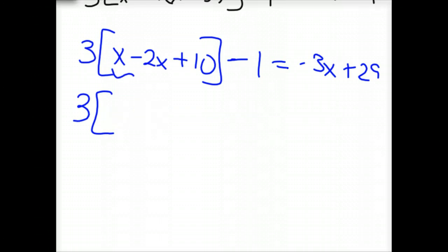So the 3 gives you x minus 2x, excuse me, that combines to -x + 10, minus 1 equals -3x + 29. And hopefully I haven't missed any negative signs. I haven't.